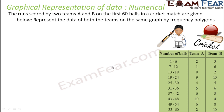The runs scored by two teams A and B on the first 60 balls in a cricket match are given, and we are asked to represent this data using a frequency polygon. For team A: 1 to 6 balls — 2 runs; 7 to 12 balls — 1 run; and similarly for team B. These are my variables. This is a non-continuous class: 6, 7, 12, 13 — non-continuous. But it doesn't matter; I just have to find the class midpoint.